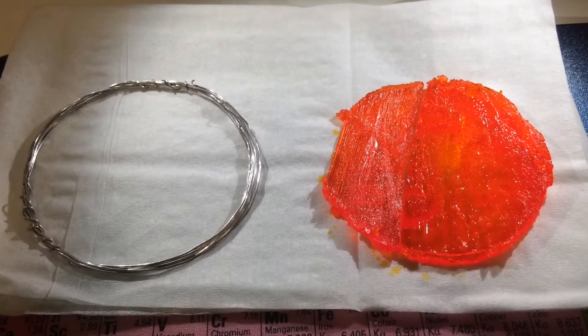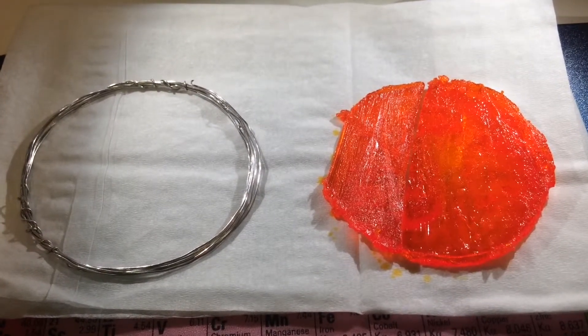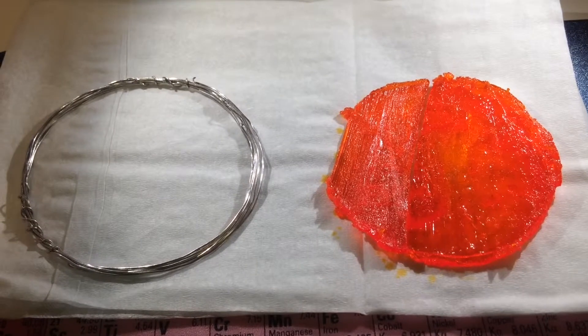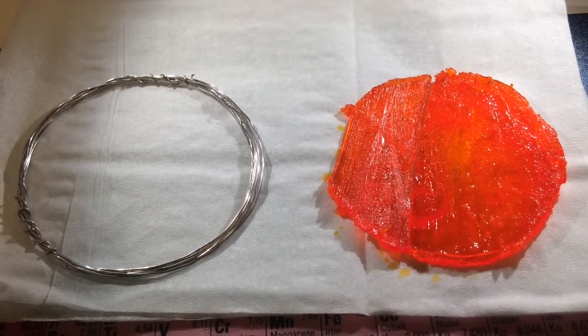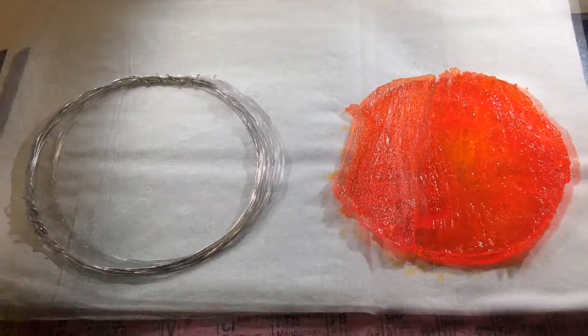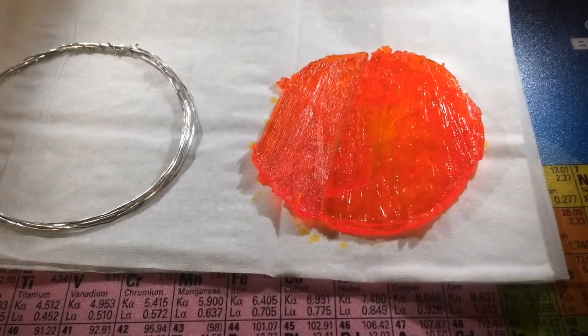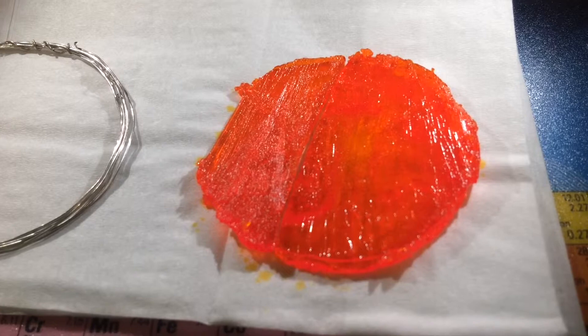And this is our chloroplatinic acid crystal that we have here on the right, and it contains five grams of platinum, the same quantity as you have on the left. So you can see the nature of the crystal.